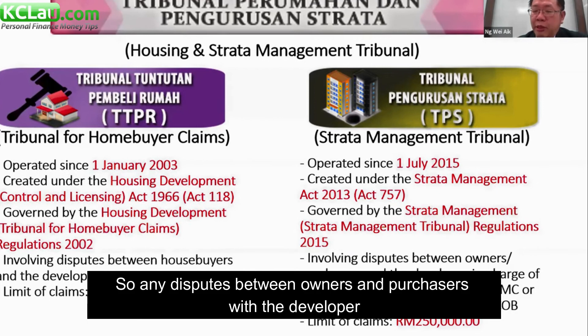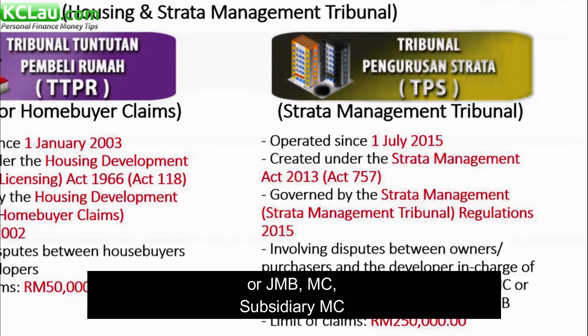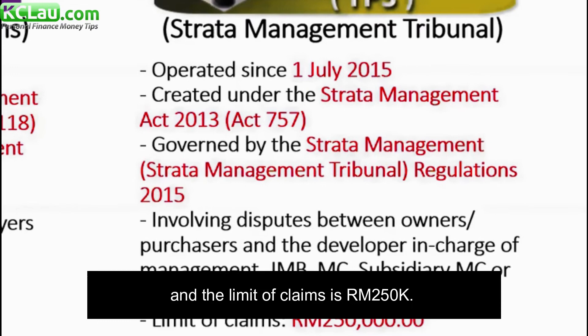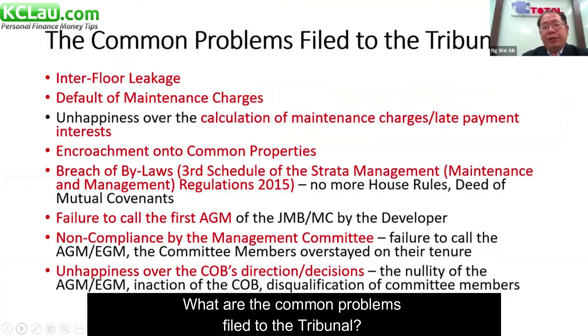Any dispute between an owner or purchaser and the developer, where the developer is in charge of management, or the JMB, MC, subsidiary MC, or managing agent appointed by the COB — if you have any dispute with them, you can file against them through the Strata Management Tribunal. The limit of the claim is $250,000.